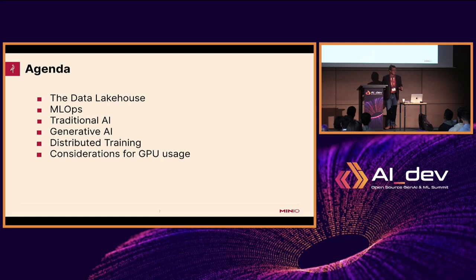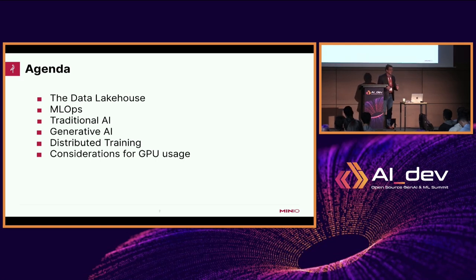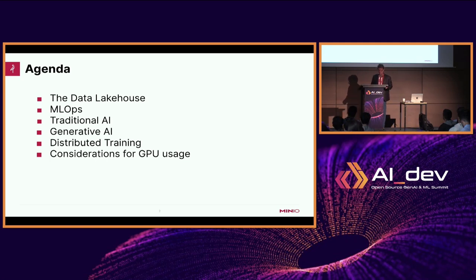I have 30 minutes to talk and 30 slides, so I still think we can have time for questions. If questions run short, I'll be at the MinIO booth both today and tomorrow. The topics I want to cover are: the concept of a data lake house and how it changes how you think about object storage; the various workloads needed for AI — that's MLOps, traditional AI, generative AI, and distributed training, which a lot of people overlook but I think is very important. And finally, we'll have a little fun with some GPU statistics.